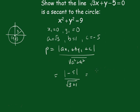And of course, that's going to be equal to 5 over 2, which is 2.5. And since 2.5 is less than 3, this must be a secant.